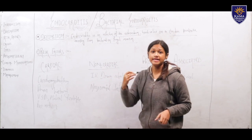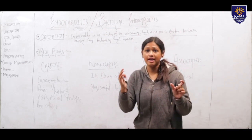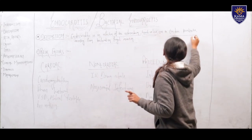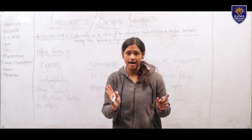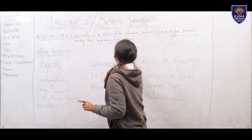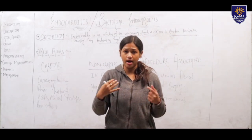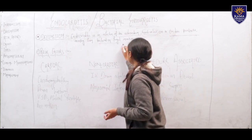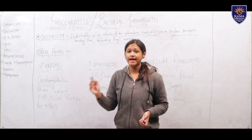Looking at the definition first: endocarditis is an infection of the endocardium — the inner lining of the heart — as well as the heart valves such as the tricuspid valve, bicuspid valve, mitral valve, and aortic valve, or a cardiac prosthesis. Prosthesis means any artificial device placed inside the heart. It results from bacterial or fungal invasion — meaning foreign bacteria or fungus invading into our body from outside.